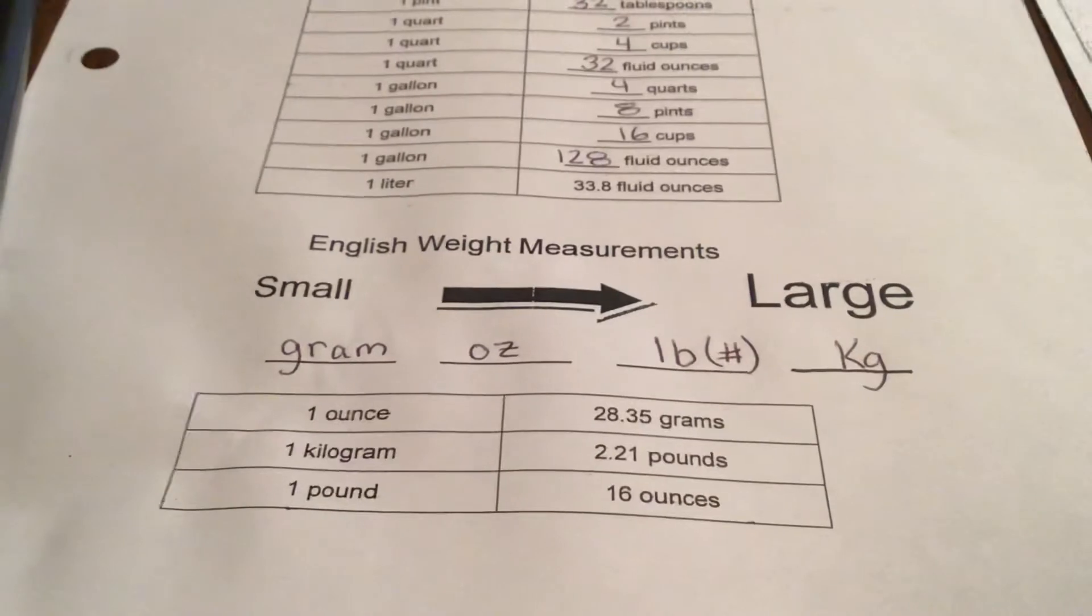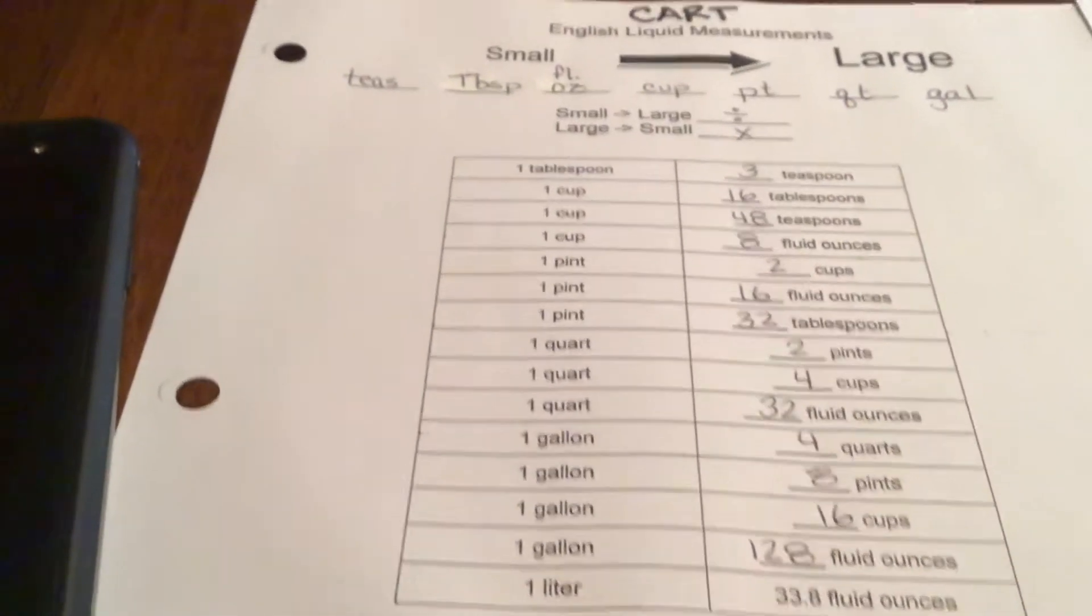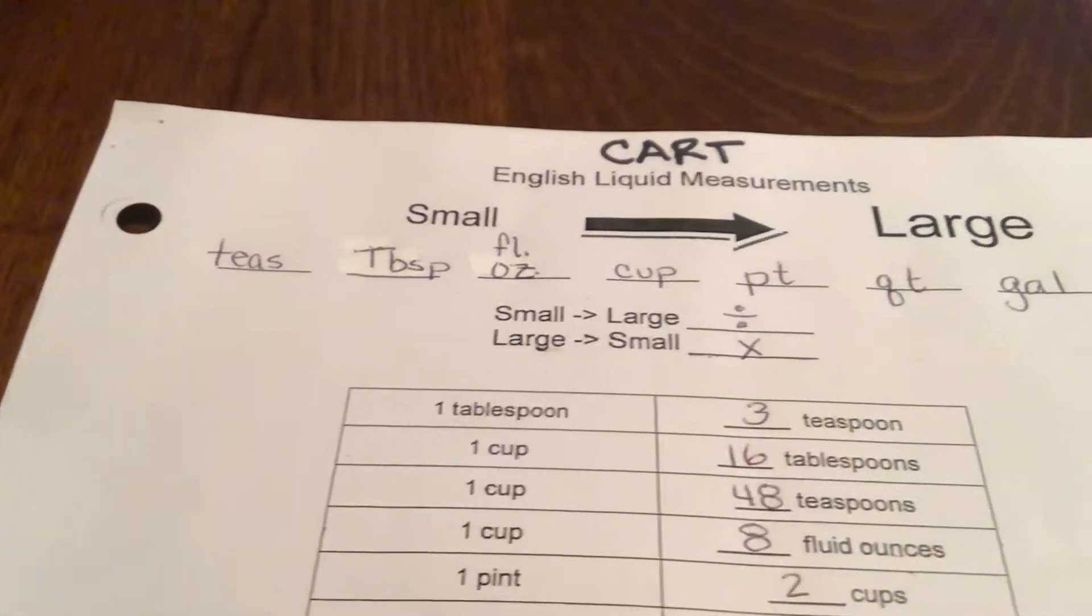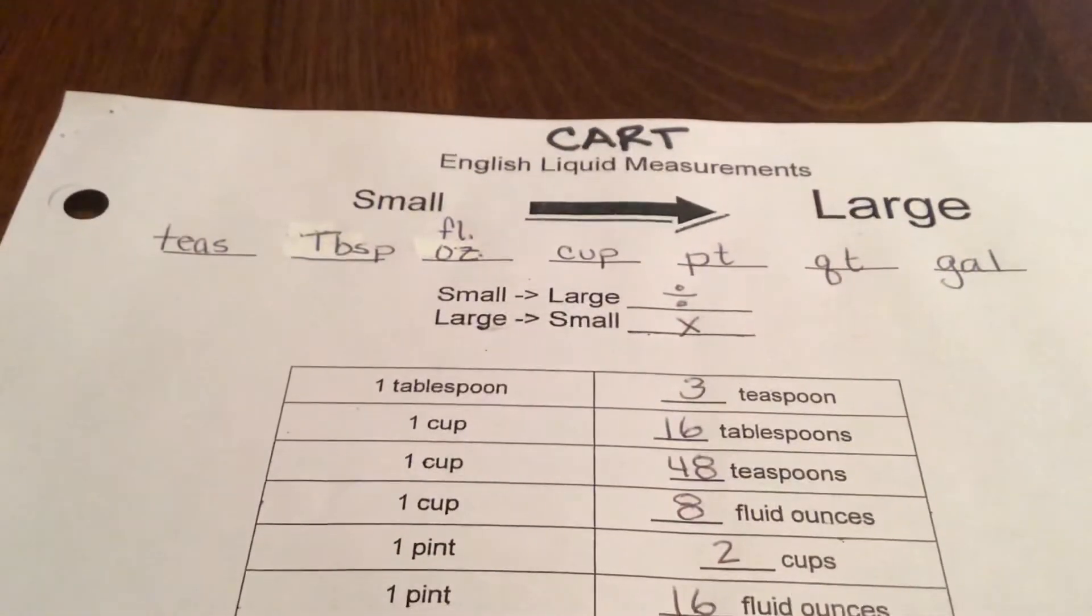I put in order at the top a list of units from smallest to largest because the method I'm going to show you uses small to large you divide, and large to small you multiply.